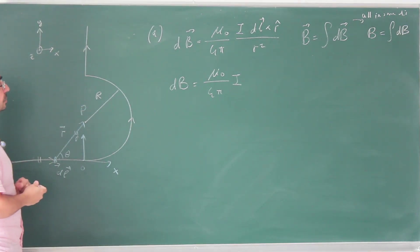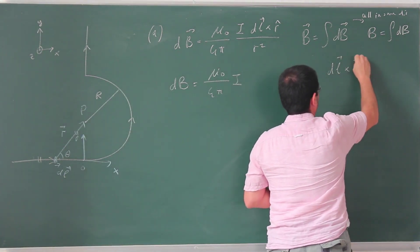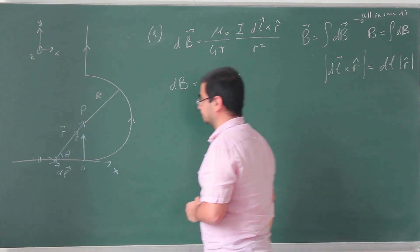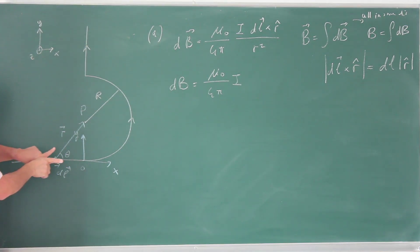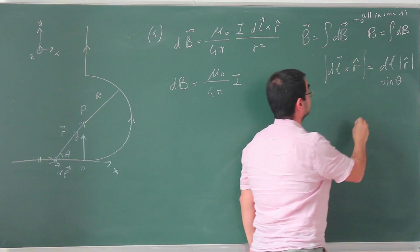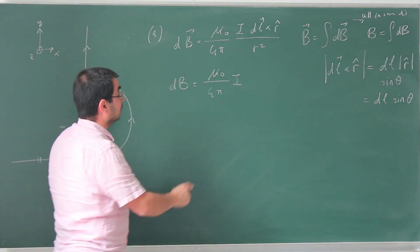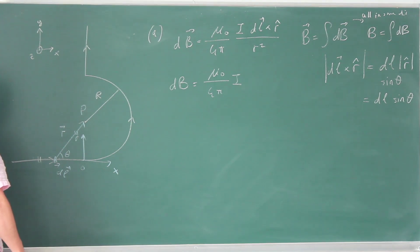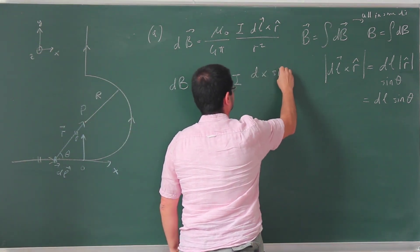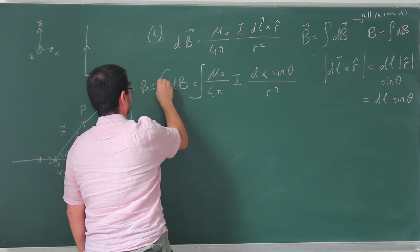Writing dB — just the magnitude — I have mu_0 over 4pi times I. For the cross product magnitude, dL cross R-hat equals dL times sine theta, since the magnitude of R-hat is 1. So dB equals mu_0 over 4pi times I times dx sine theta divided by R squared. Since we're integrating from minus infinity to 0, dL is simply dx. I need to integrate this to get B, and I must decide on the limits of integration. Both theta and R depend on x, so I need to express everything in terms of one variable.